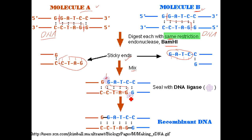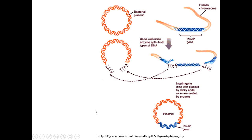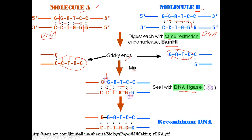We use DNA ligase, an enzyme that you have in your cells — it's necessary for joining together Okazaki fragments during DNA replication. Now it's used as a technology to join together these two sections of DNA, forming a bond using the DNA ligase. What we have done is recombined the DNA from two different sources, and this is now referred to as recombinant DNA.